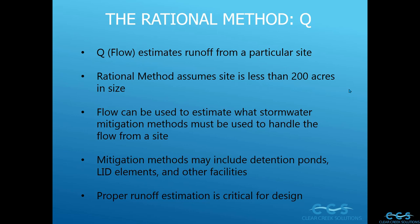Q, or flow, can be used to estimate what stormwater mitigation methods must be used to handle the flow from a site. This is really important when it comes to stormwater design — we need to know what that Q is so that when a stormwater event occurs we know how much runoff we're getting and what that peak flow is. For example, if you had a few acres of forest, cut down some of that forest and put in pavement, using the rational method we need to find that peak flow — do we need a detention pond, low impact development, or other facilities to mitigate stormwater and prevent flooding or erosive flows?